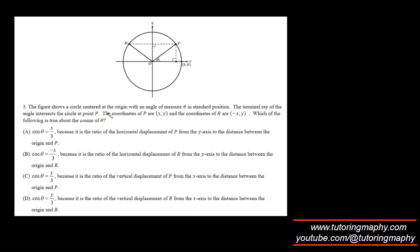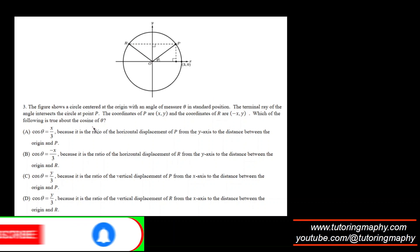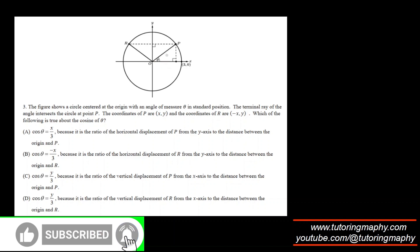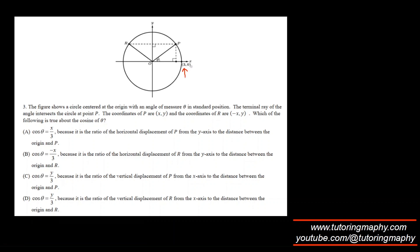Here the terminal ray is the one that ends at P. The coordinates of P are x, y, and the coordinates of R are negative x, y. Which of the following is true about the cosine of theta? Cosine of theta is adjacent over hypotenuse. The hypotenuse has to be 3, because that is the radius of the circle. The adjacent is the x-coordinate. So cosine of theta is x over 3 — the ratio of horizontal displacement from the y-axis. So the answer is option A.